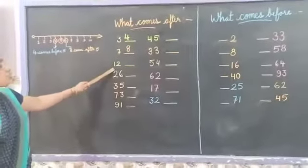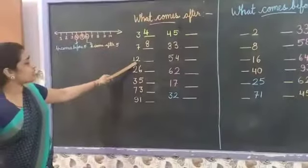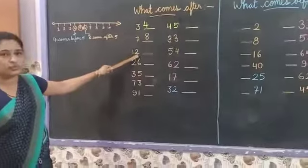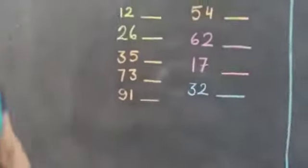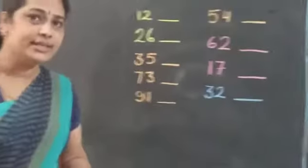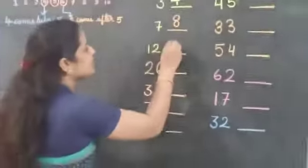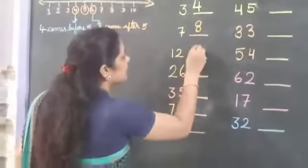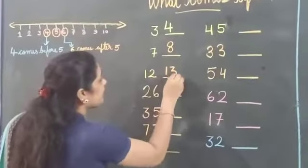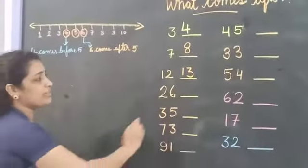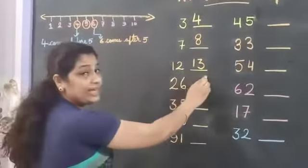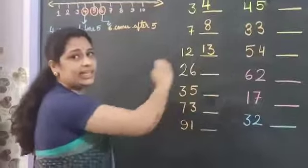Next number is 12. What comes after 12? 13. We write 1, 3 — that's 13. So 12 after is 13.